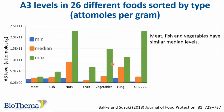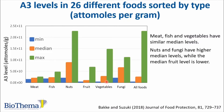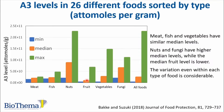A3 levels in 26 different foods sorted by type show that meat, fish, and vegetables have similar median levels. Nuts and fungi have higher median levels, while the median fruit level is lower. The variation even within each type of food is considerable.